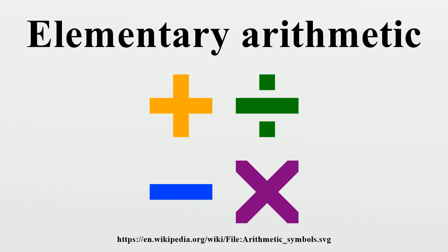0 is used in the absence of objects to be counted. For example, a different way of saying there are no sticks here is to say the number of sticks here is 0. 1 is applied to a single item — here is one stick. 2 is applied to a pair of items — here are two sticks. 3 is applied to three items — here are three sticks. 4 applied to four items, 5 to five, 6 to six, 7 to seven, 8 to eight, and 9 applied to nine items — here are nine sticks.